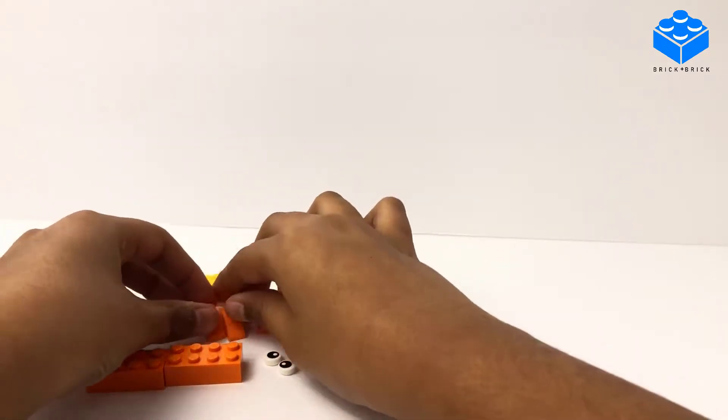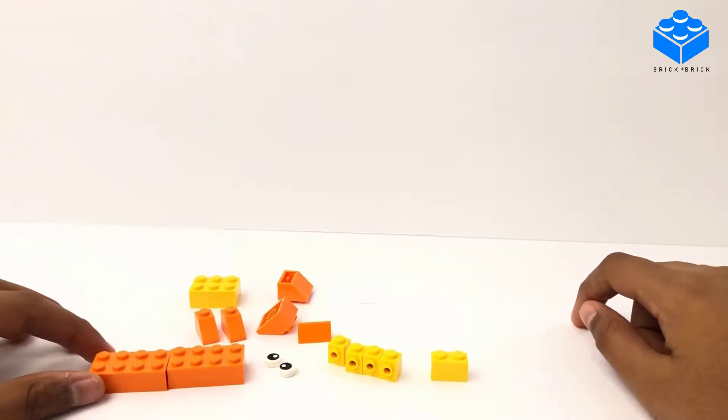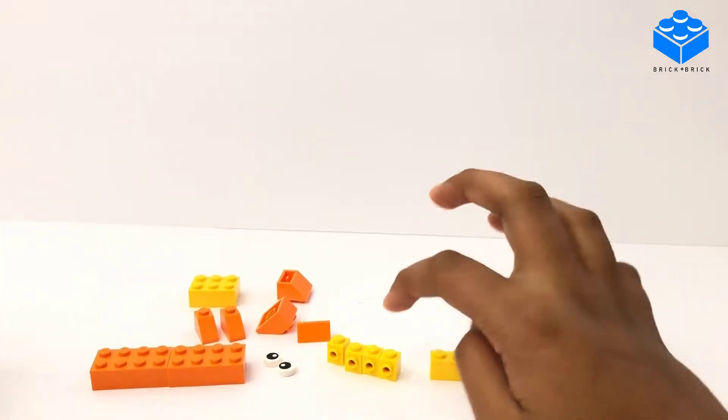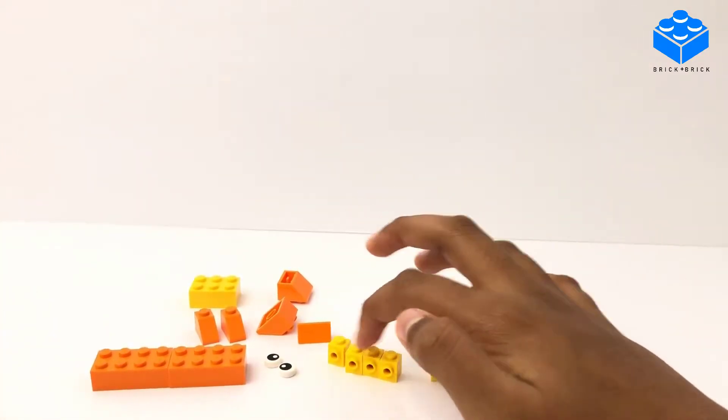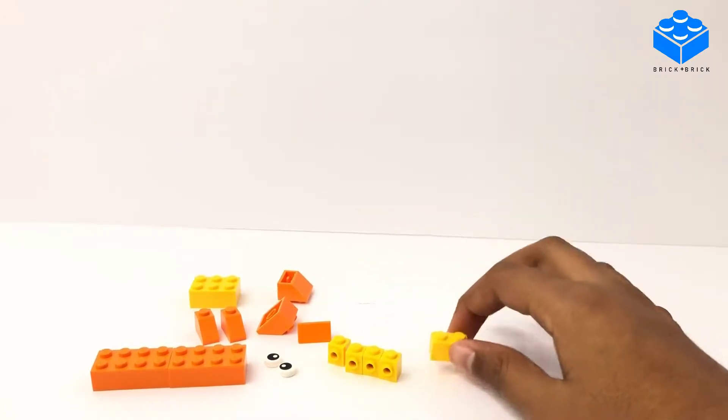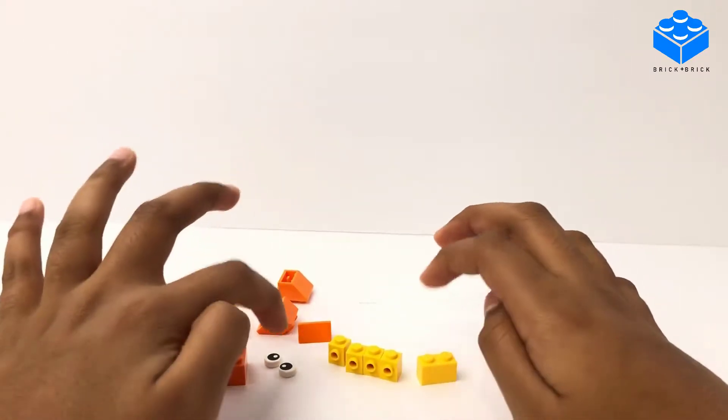So let's count out the pieces. We have two orange 2x4s, four 1x1s with holes, one yellow 1x2, and two 1x1 tile pieces.